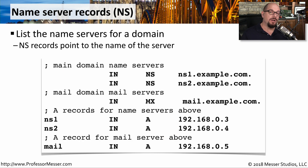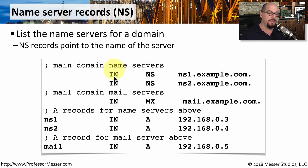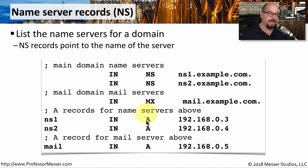Many DNS servers also contain configuration details for additional name servers on the domain. These are NS records, or name server records. The format of a name server record specifies the class of this record, which is internet, the record type NS, and then you list out the names associated with those name servers. Later in the configuration, you can find A or address records that will associate the name of the name server to a specific IP address.